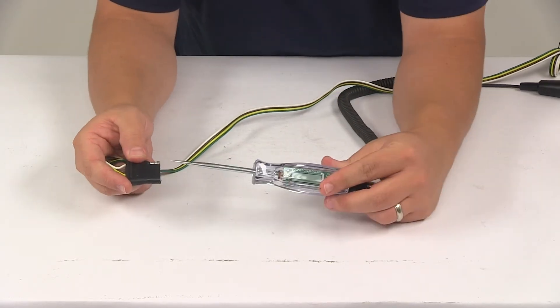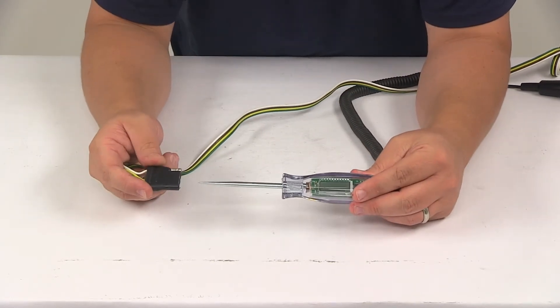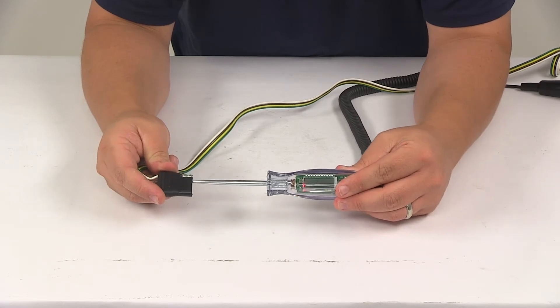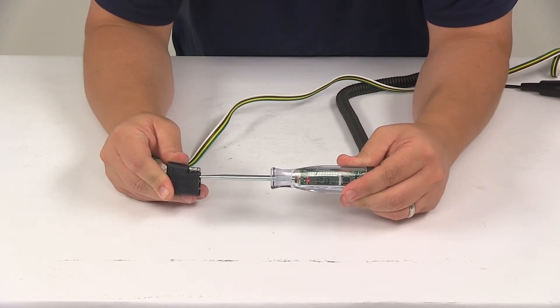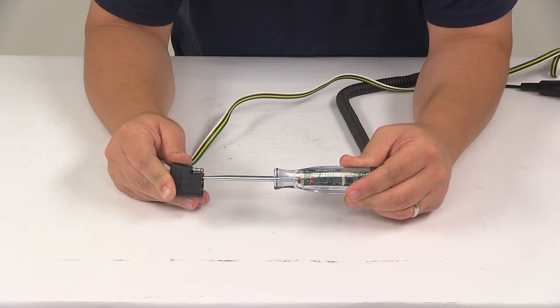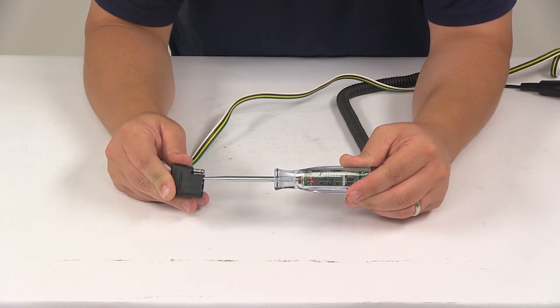And then you can touch the probe to a circuit terminal or wire. And then the LED is going to illuminate red. And the LCD will display the measured voltage if the terminal has power.